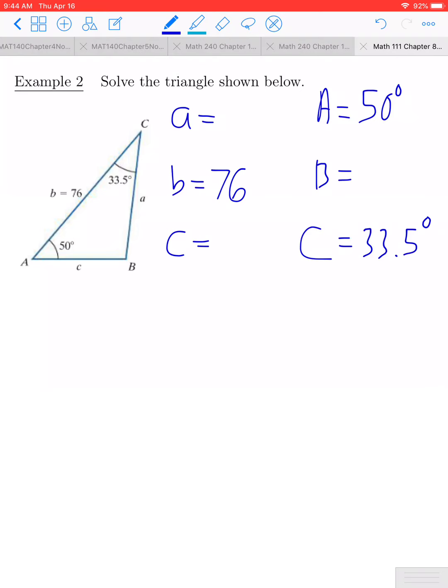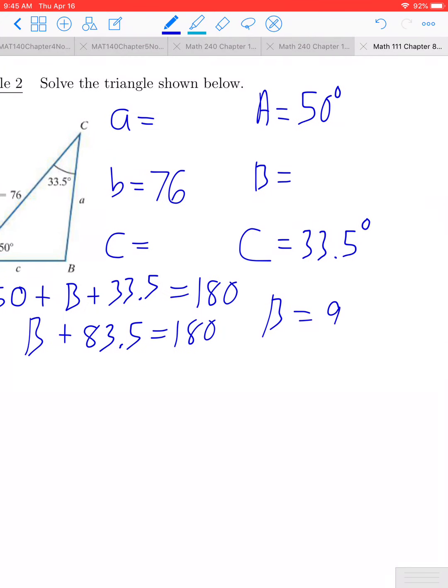The next thing we can solve for pretty easily is angle B, just like what we did before. All of the angles in the triangle have to add up to 180, so if I do angle A plus angle B plus angle C, this should equal 180 degrees. If I do 50 plus 33.5, that's going to give us 83.5. Go ahead and subtract that from 180. 180 minus 83.5 is going to give us 96.5. So the measure of angle B is 96.5 degrees.